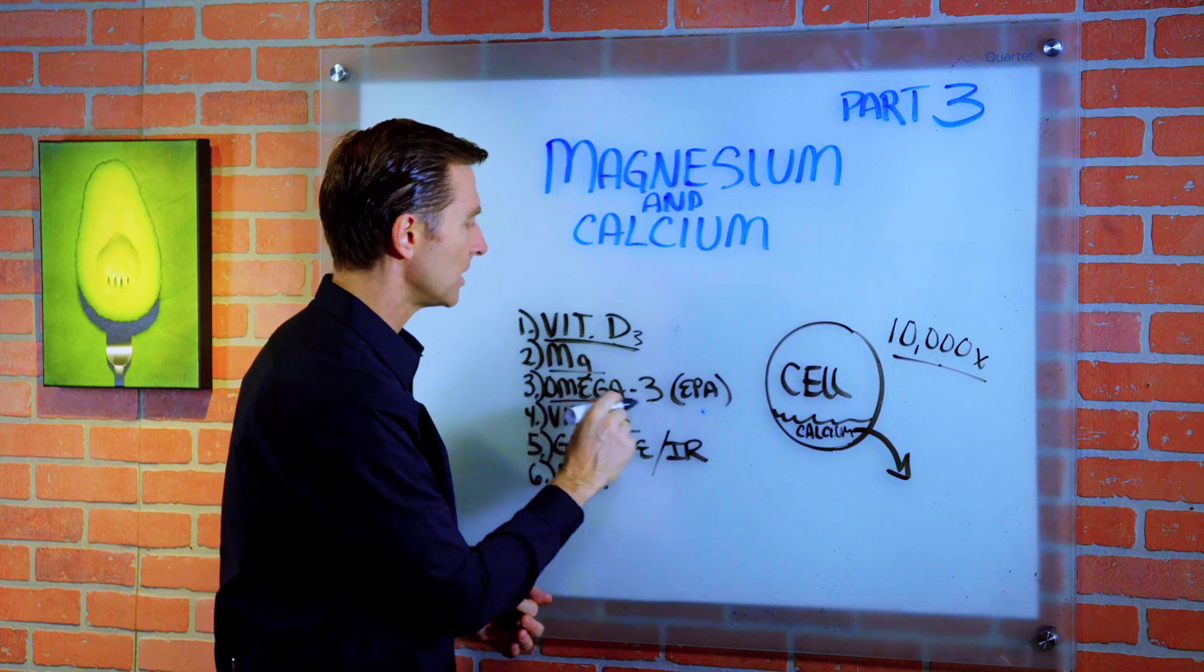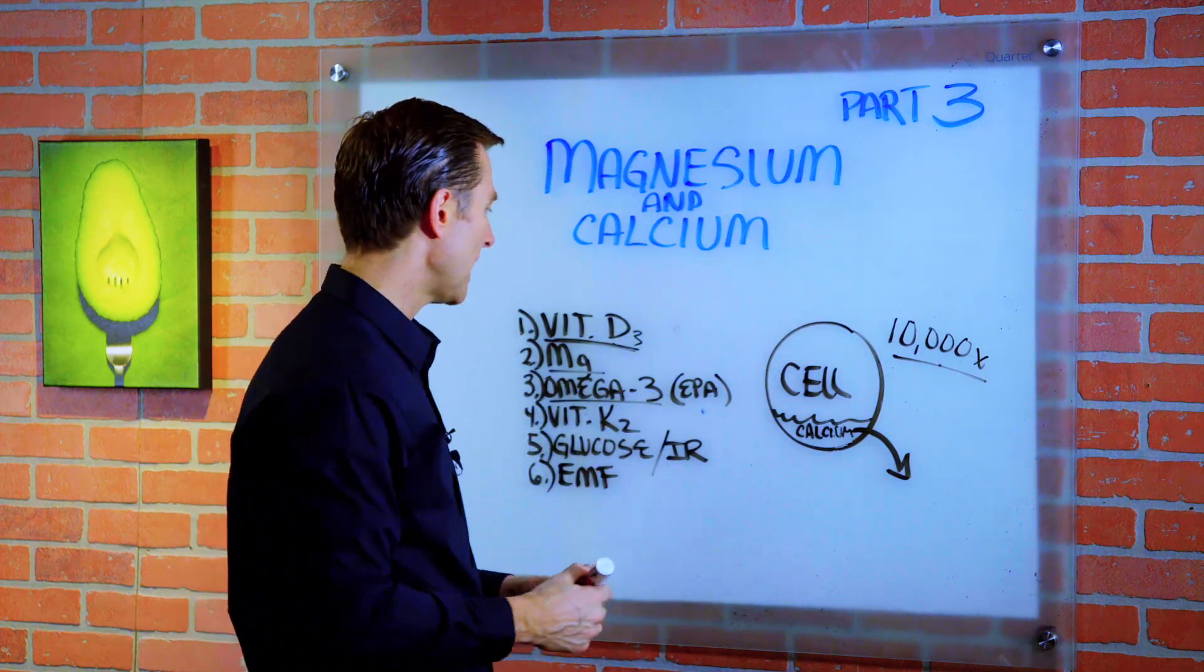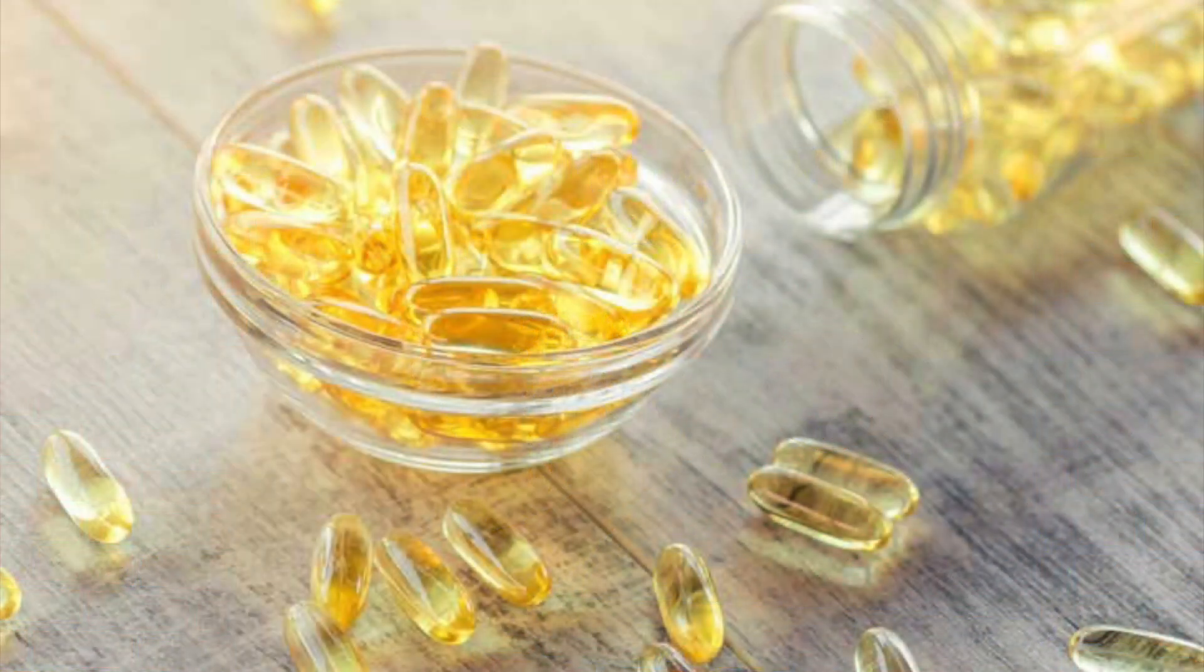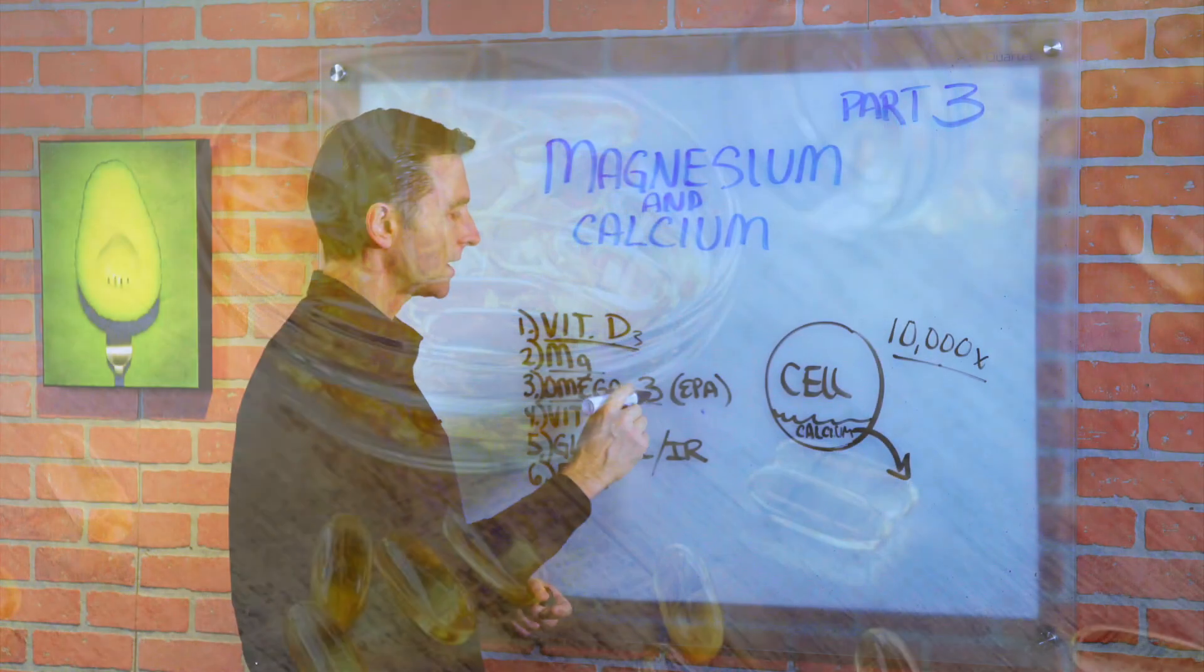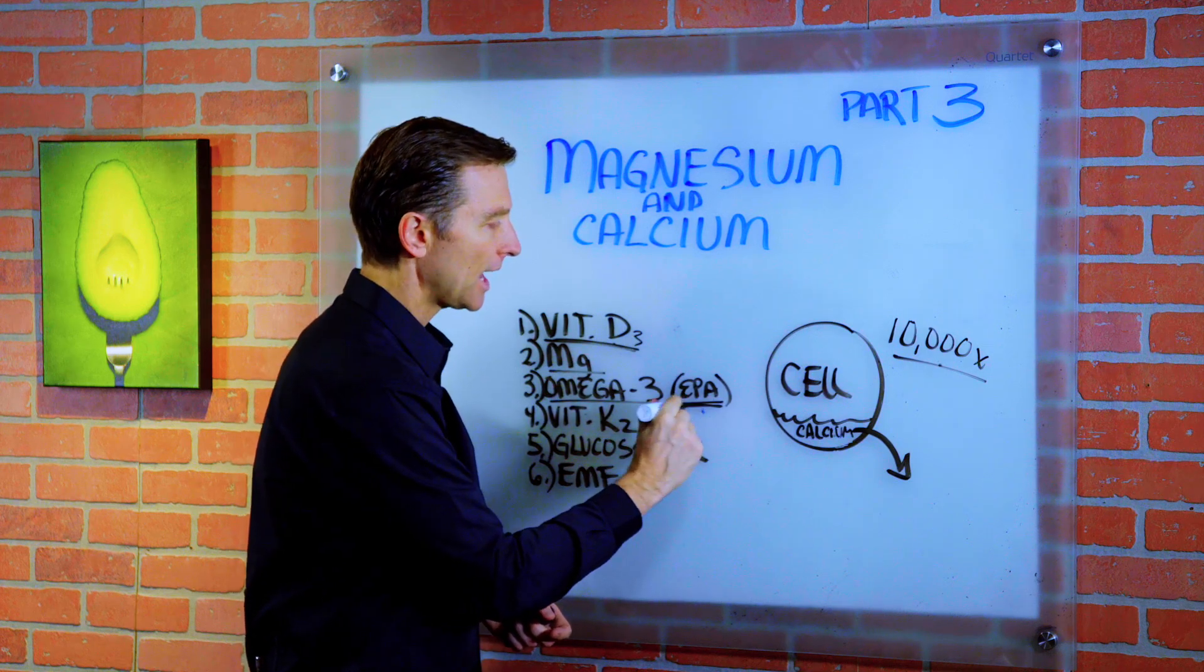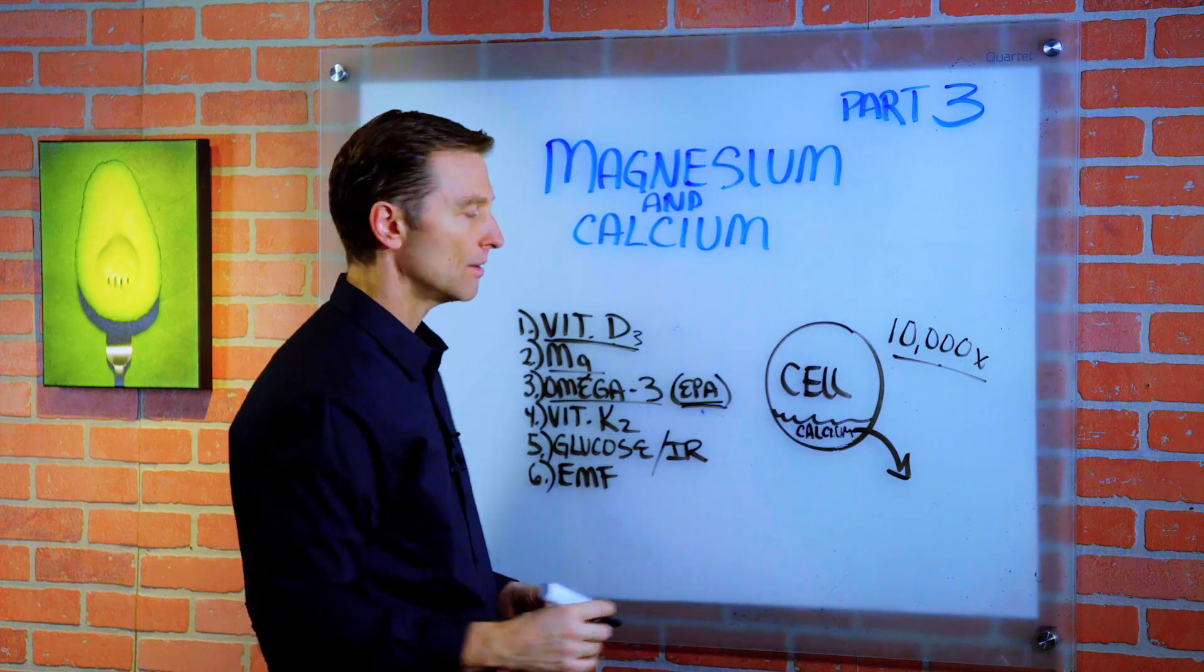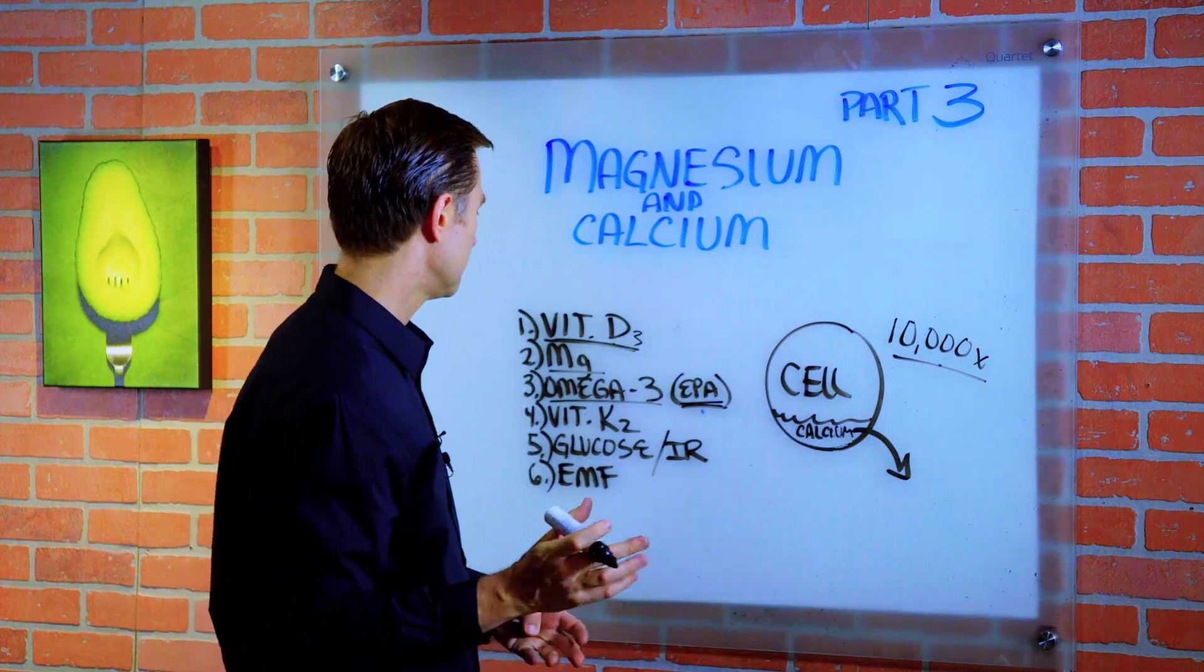All right. Number three, omega-3 fatty acids. Fish oils, salmon oil is the best. Cod liver oil is great. There's a couple of different types of omega-3. You have DHA and EPA. It's the EPA that will help lower the excess calcium. So omega-3 fatty acids.